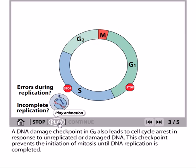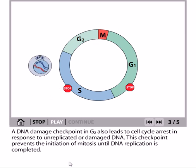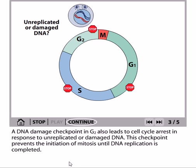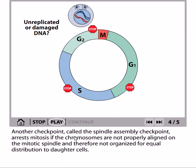A DNA damage checkpoint at G2 leads to cell cycle arrest in response to unreplicated or damaged DNA. If the DNA is unreplicated or a portion of it is damaged, this checkpoint prevents the initiation of mitosis until DNA replication is completed.